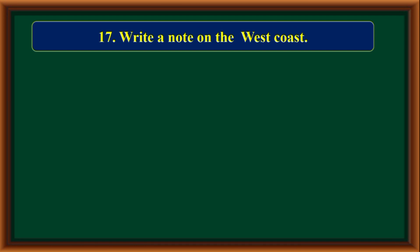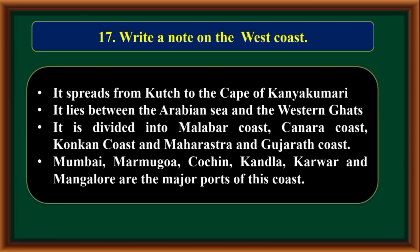Write a note on the west coast. It spreads from Kutch to the Cape of Kanyakumari. It lies between the Arabian Sea and the Western Ghats. It is divided into Malabar coast, Konkan coast, and Maharashtra and Gujarat coast. Major ports: Mumbai, Marmugao, Kochi, Kandla, Karwar, and Mangaluru.